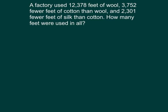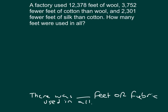Here we have a factory that used 12,378 feet of wool, 3,752 fewer feet of cotton than wool, and 2,301 fewer feet of silk than cotton. How many feet were used in all? We have three different fabrics, and we need to find the blank feet of fabric used in all.